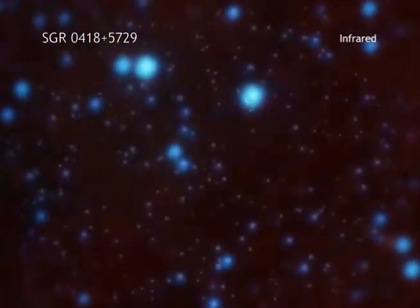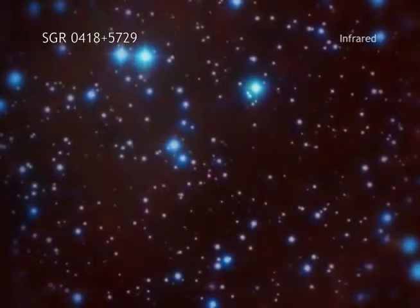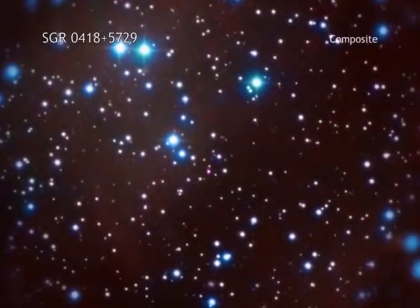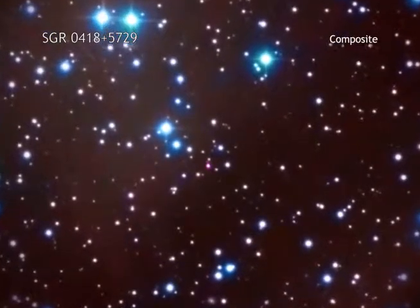Now, astronomers have spotted a magnetar called SGR0418 with a much lower magnetic field on its surface.